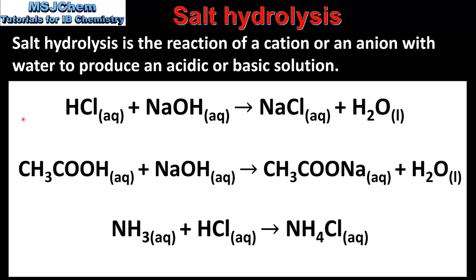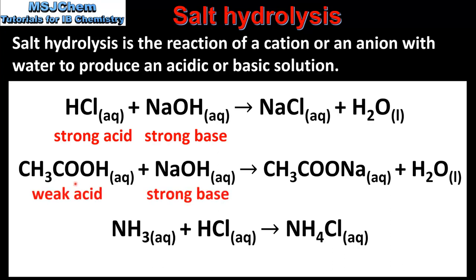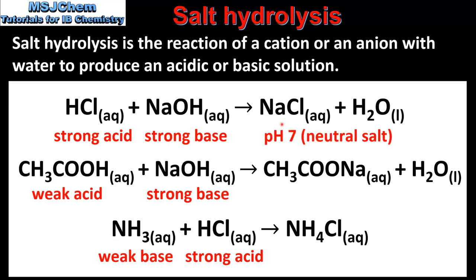Here we can see three neutralization reactions. In our first reaction, hydrochloric acid reacts with sodium hydroxide to produce sodium chloride and water. In our second reaction, ethanoic acid reacts with sodium hydroxide to produce sodium ethanoate and water. And in the final reaction, ammonia reacts with hydrochloric acid to form ammonium chloride. In our first reaction, which involves a strong acid and a strong base, the solution formed has a pH of 7.